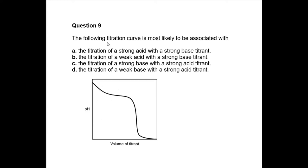Question nine: looking at this titration curve, I start way up at a very high pH — likely a strong base — and end down at the bottom, going towards a strong acid. The large change in pH at the equivalence point confirms a strong base versus strong acid titration. Since the pH is going down as titrant is added, the acid is the titrant. We are adding a strong acid to a strong base, so the answer is C. Note that A is also strong base–strong acid but has the strong base as titrant, so pH would go up.